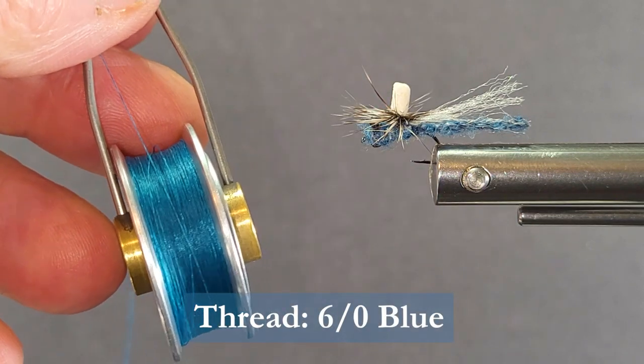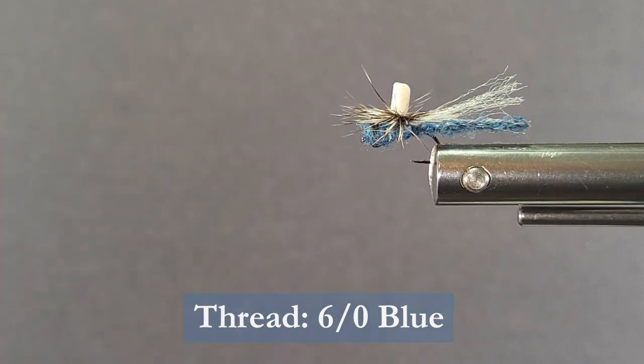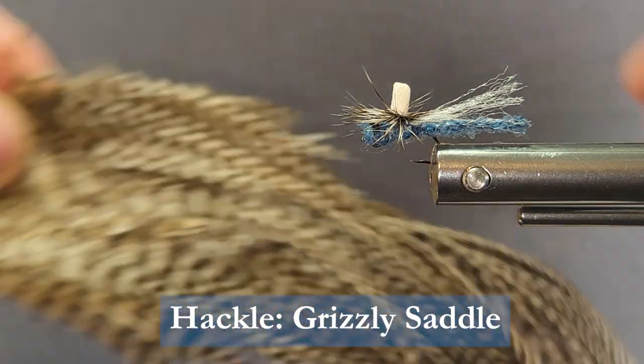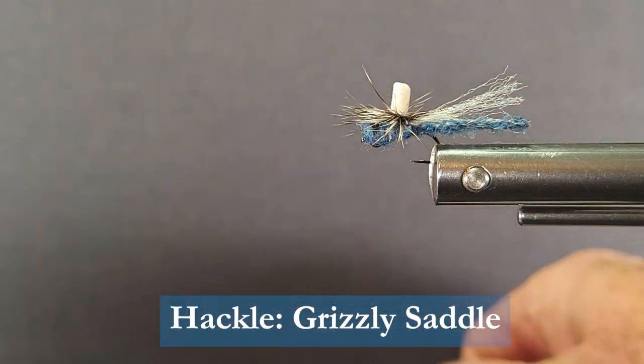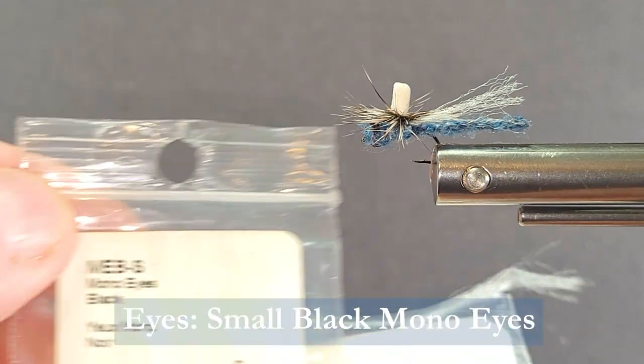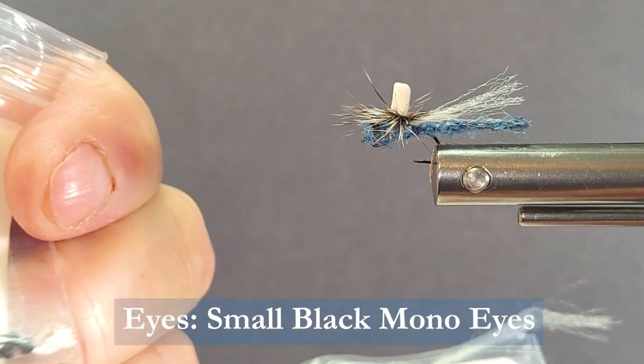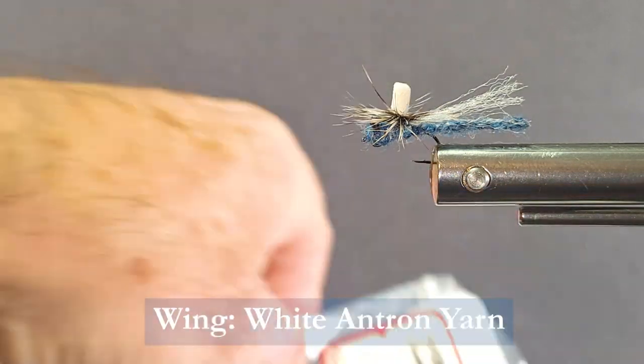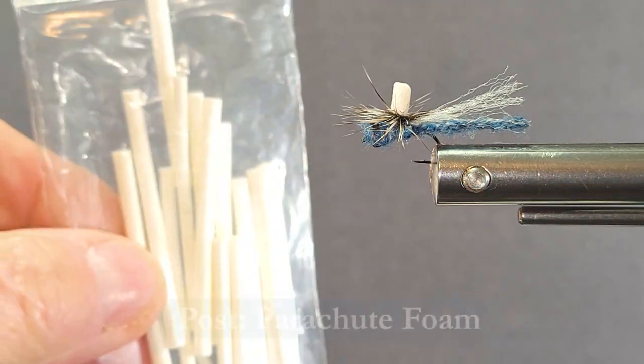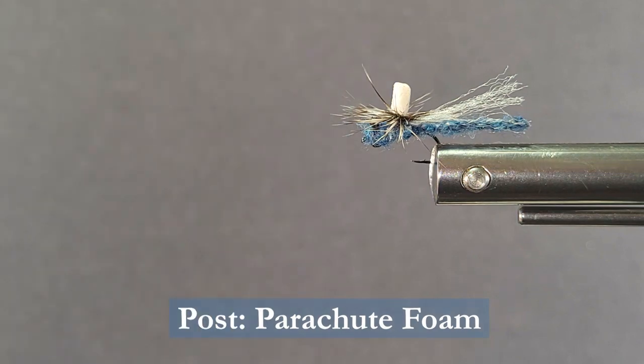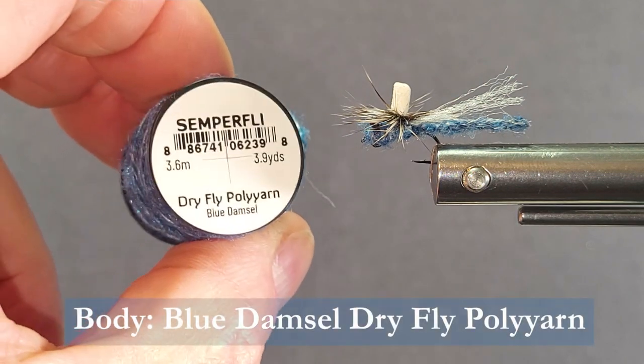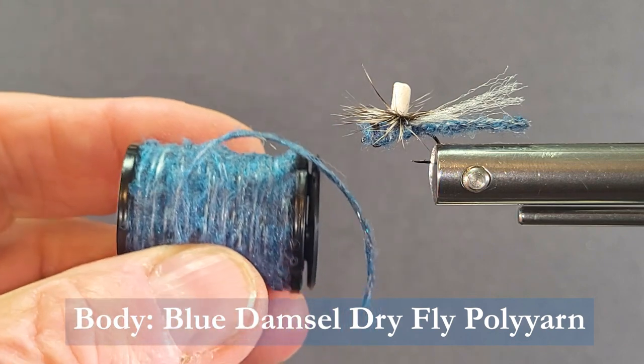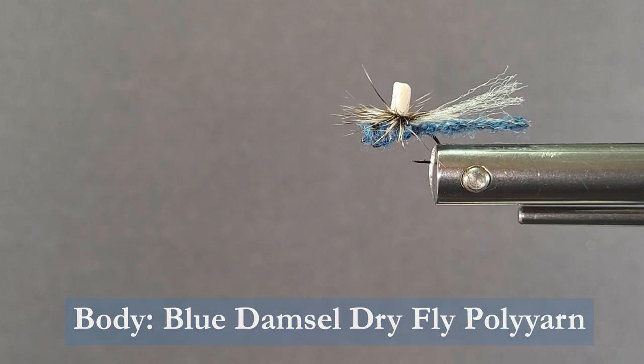I have some blue 6-0 thread to tie with, you can use black or whatever you have. I'm going to use a little bit of this dry fly saddle in Grizzly. I'm going to put some small mono eyes on here, black mono eyes. I'm also going to use some white antron for the wing, and some parachute posts for the parachute.